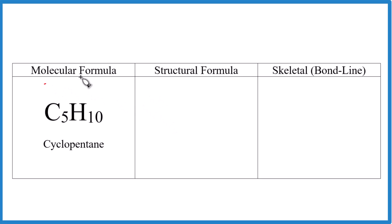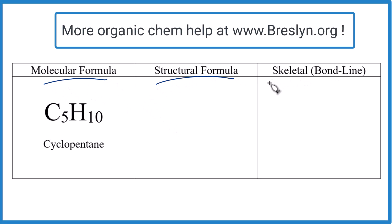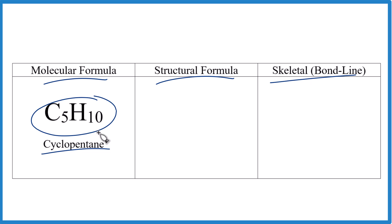So we're going to draw the molecular, the structural formula, and then that skeletal or bond line formula for cyclopentane and its molecular formula, C5H10.